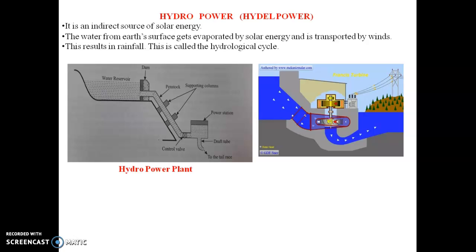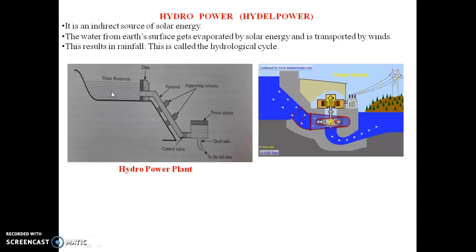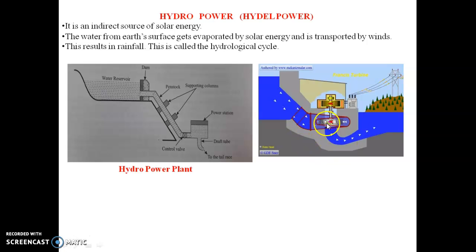The rainwater flowing as a river can be stored at high levels by building dams across rivers and released in a controlled manner to generate mechanical power using a water turbine. The mechanical energy is further converted into electrical energy using generators coupled to the turbines.